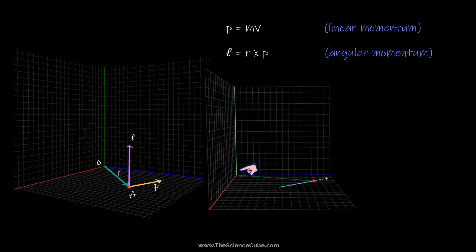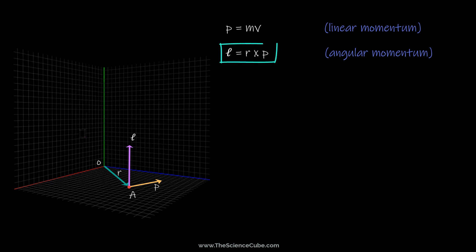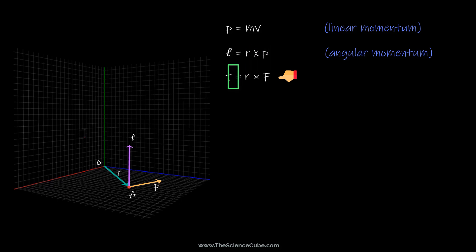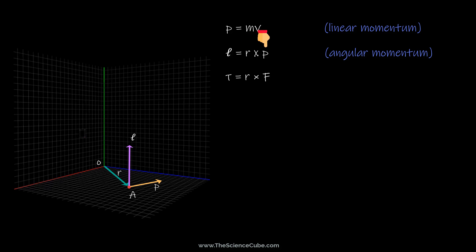If you compare this equation to the torque equation, you will see that angular momentum bears the same relationship to linear momentum that torque does to force. That is, for torque we did a cross product of r with force F, and here we did a cross product of r with linear momentum p.